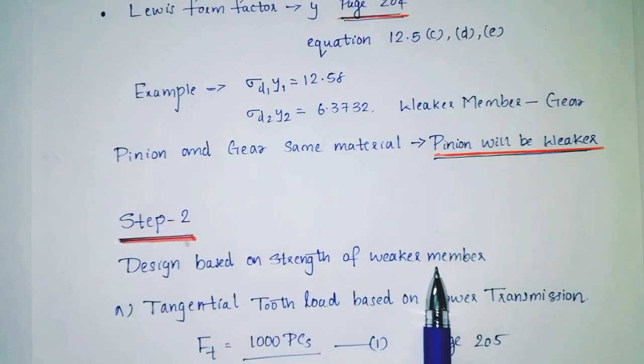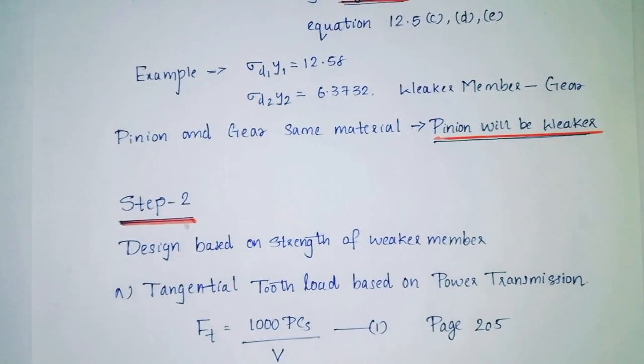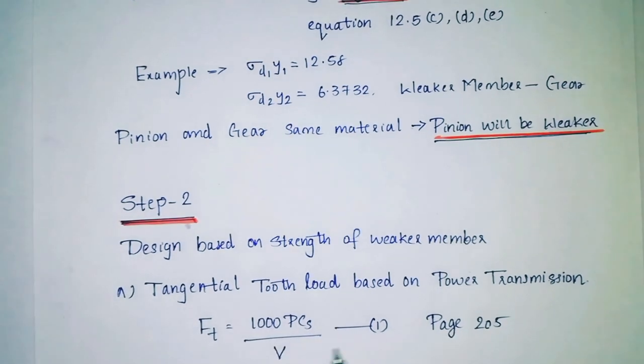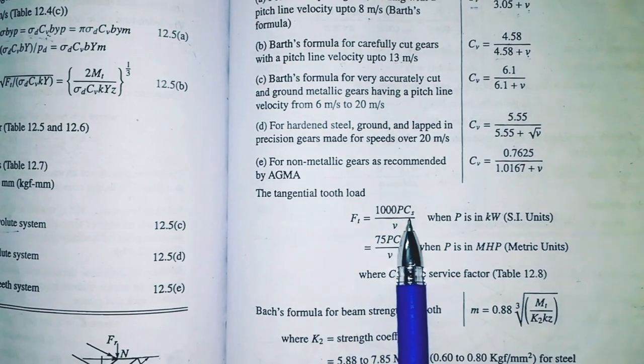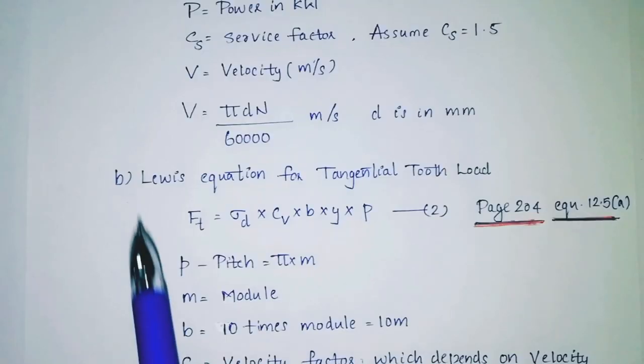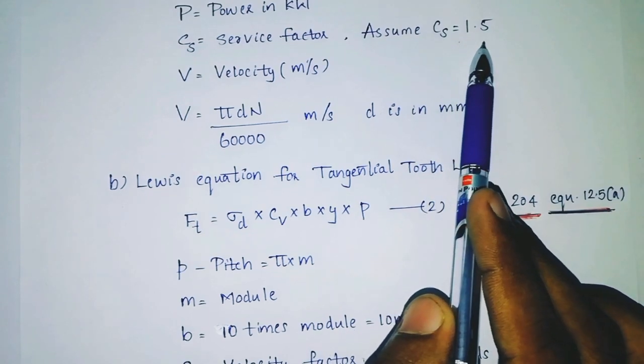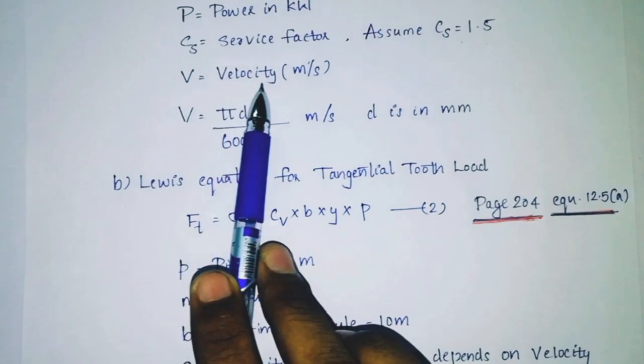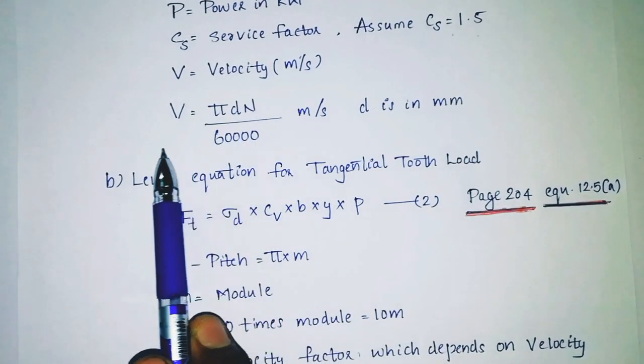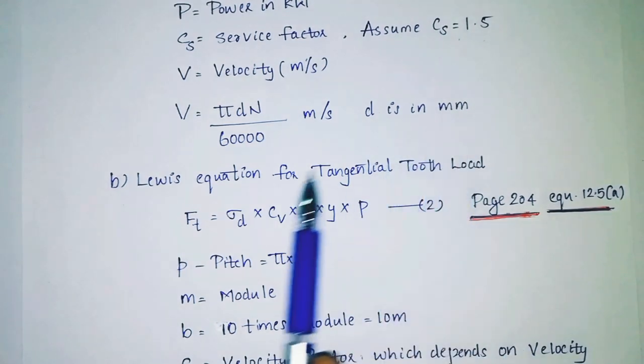Step 2: Design based on strength of weaker member. What is tangential tooth load based on power transmission? Let's look at this equation: Ft equals 1000 Pcs divided by v. Page number is 25. P is in kilowatts, Cs is service factor, assume Cs equals 1.5. V is velocity in meters per second. V equals pi d n divided by 60,000 meters per second, where d is in millimeters.